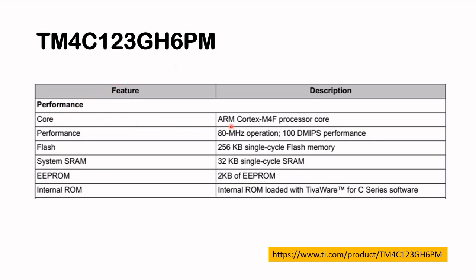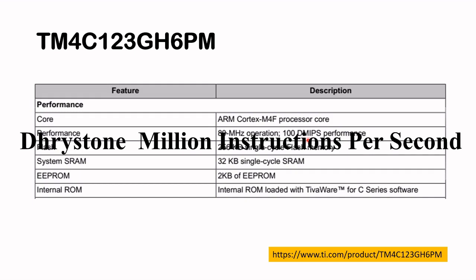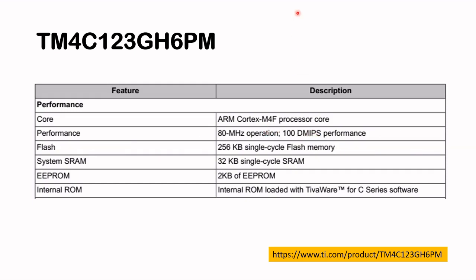The core is an ARM Cortex M4F processor core — the F here stands for the floating point unit. The performance is 80 MHz, 100 DMIPS. DMIPS stands for Dhrystone MIPS instructions per second, which is a computer benchmark. It has 256 KB of single-cycle flash memory and 32 KB of single-cycle SRAM.